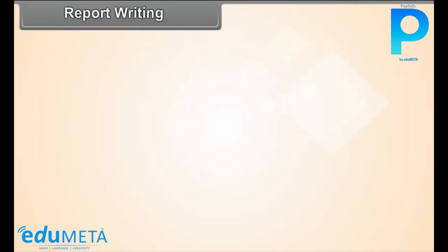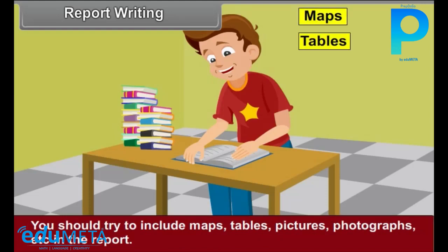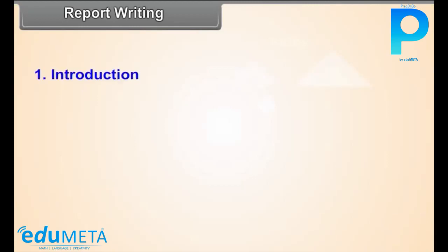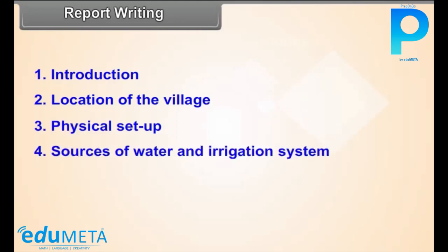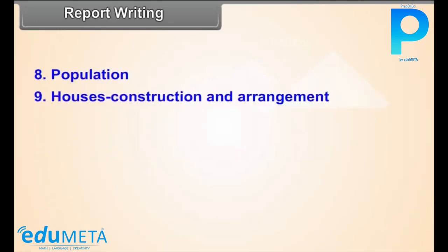Report Writing. After collecting information about all these various aspects, it is necessary to prepare a report of the visit. You should try to include maps, tables, pictures, photographs, etc. in the report. Prepare a report with the help of the following points: Introduction, Location of the village, Physical setup, Sources of water and irrigation systems, Plants and animals, Soils, Agriculture and allied activities, Population, Houses — construction and arrangement, Occupations of the people, Human life, Facilities and amenities, Inferences and conclusions, Acknowledgements, and References.